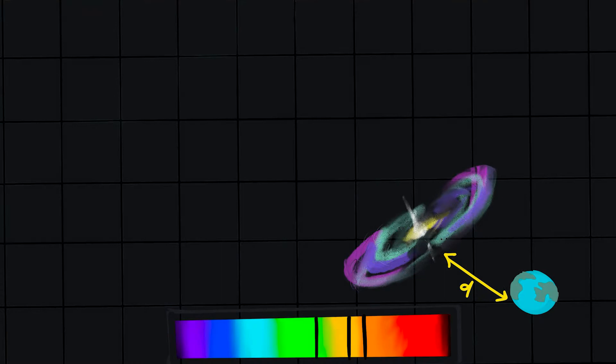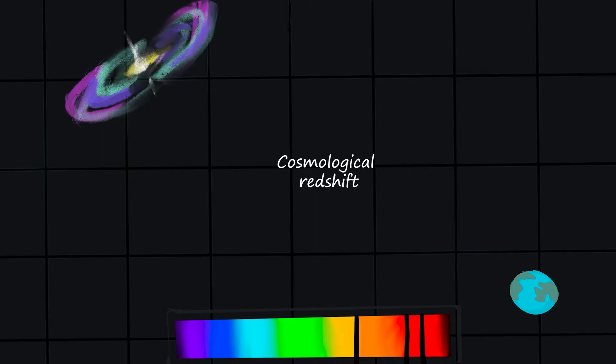The usual explanation for this redshift is that because the galaxies are distant, due to the expansion of the universe, they will be receding from the earth at very high speed. And hence, their light will be Doppler shifted to longer wavelengths. This is also known as a cosmological redshift.